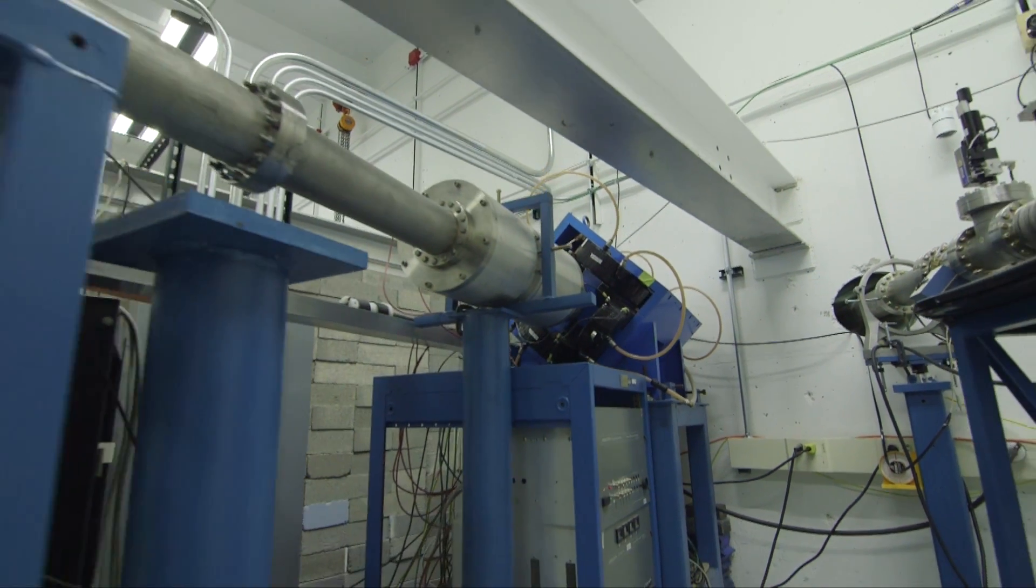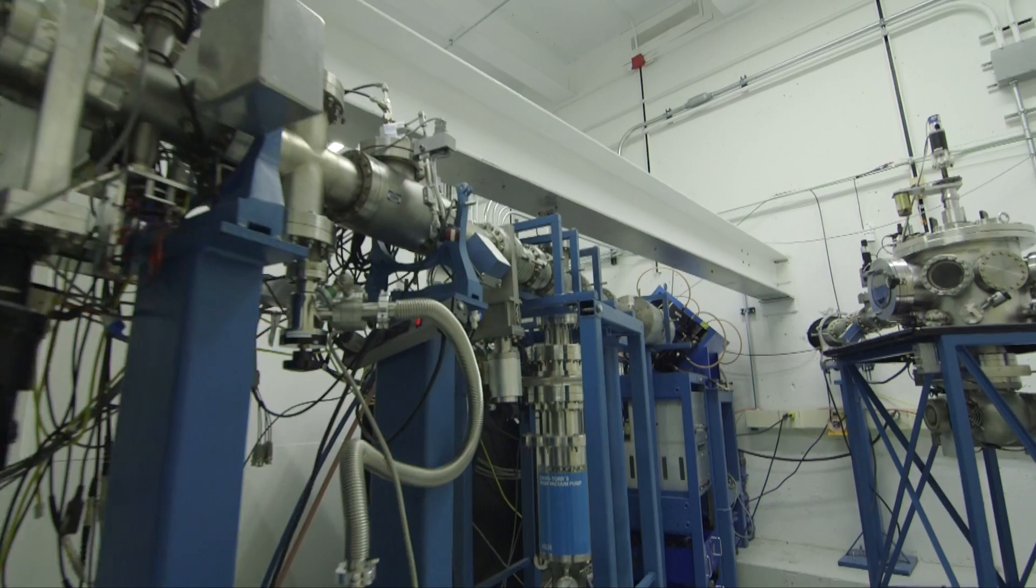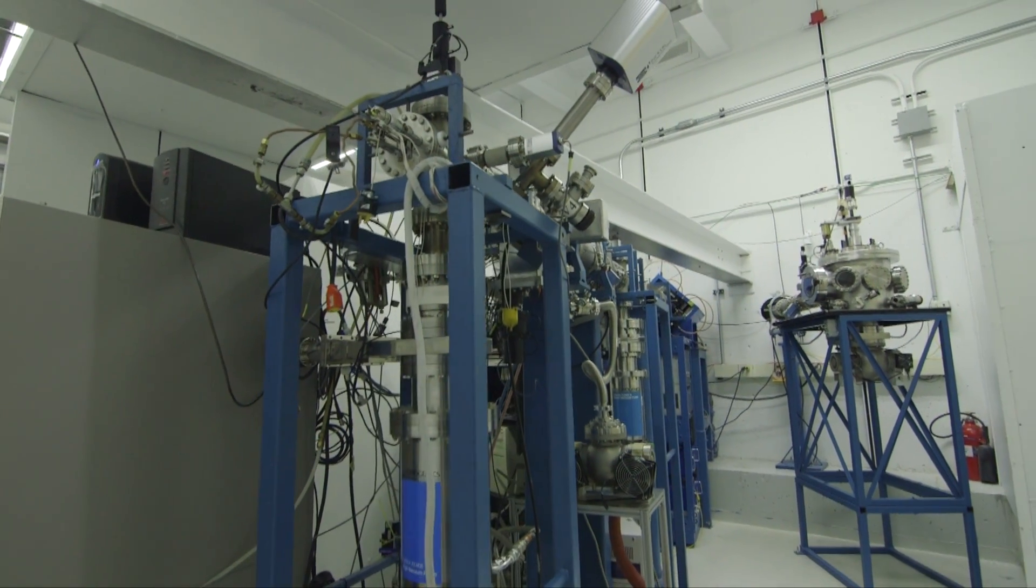The ion irradiation chamber on beamline 2 is used for single ion irradiation experiments. The stage is temperature controlled and monitored using a high-resolution digital imager.